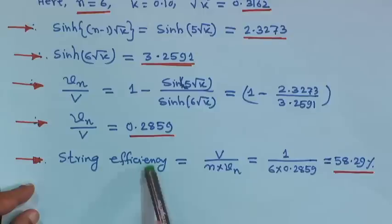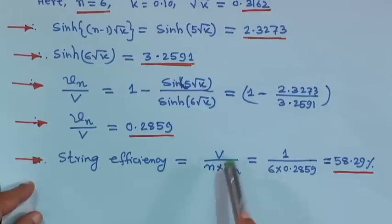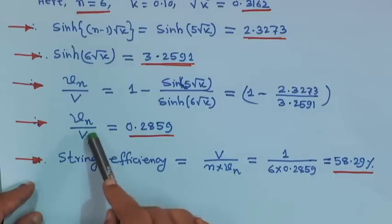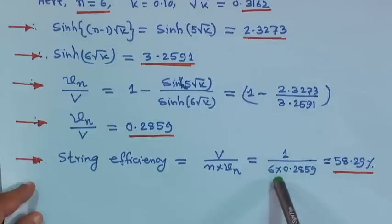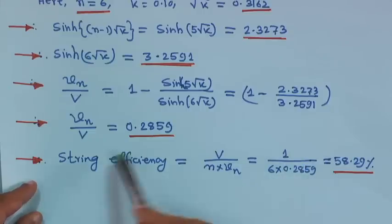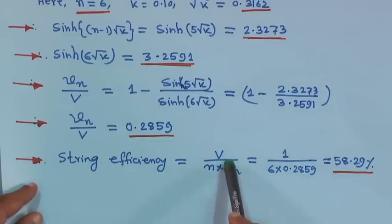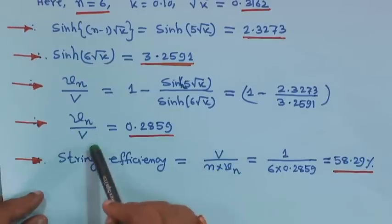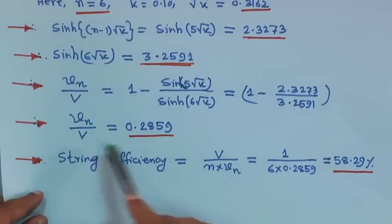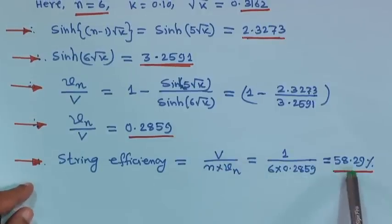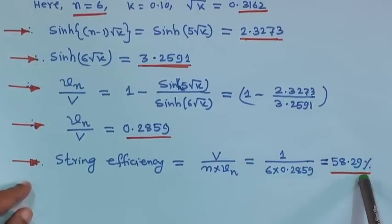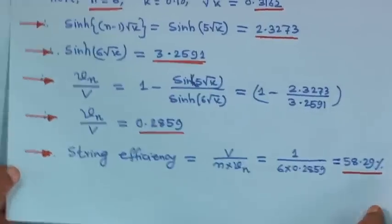V_n/V is 0.2859. Therefore, string efficiency equals capital V divided by n times small V_n. Since V_n/V is 0.2859, it is 1 divided by (6 × 0.2859), which comes to roughly 58.29 percent. That is the string efficiency.